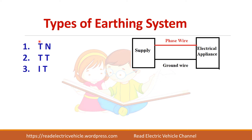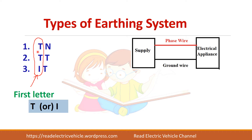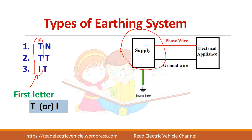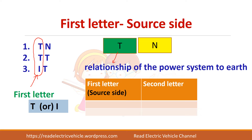Looking at the first letter in all three cases, it is either T or I. T represents earth or land, and I means isolated — that is, isolated from the earth. The first letter represents how the source is connected to the earth: whether it is connected to earth or isolated from earth. For the first letter, T means a direct connection of the source to the earth, while I means all live parts on the source side are isolated from the earth.